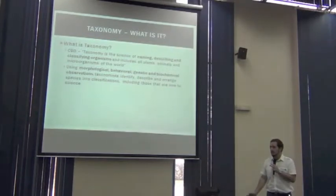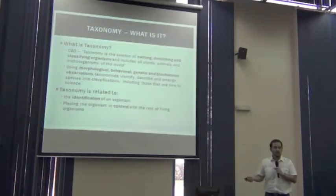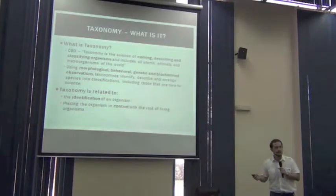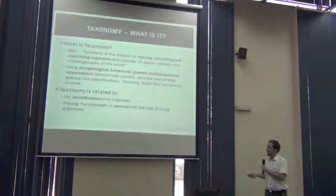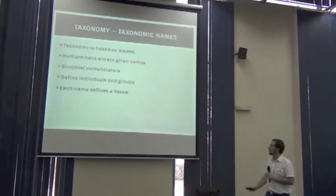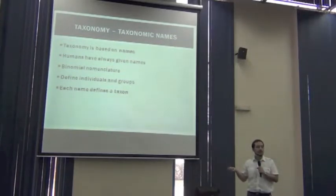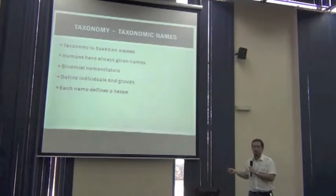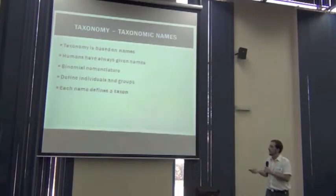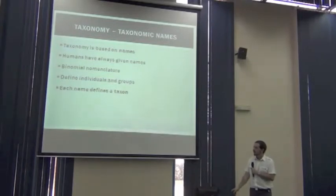There are two key concepts here: identification and classification. Taxonomy is both things — the identification of an organism and placing that organism in context with the rest of the living organisms. The identification has to do with names. Taxonomy is based on names that have been used by humans to identify living organisms.